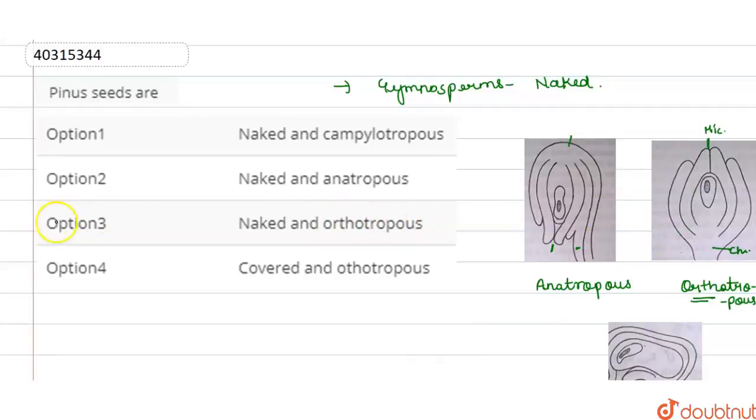So, there are naked and orthotropes in option 3, which is correct. So, the answer will be option 3.